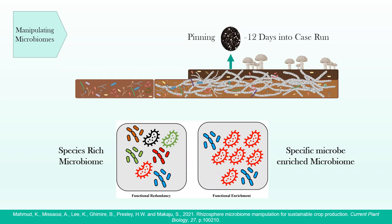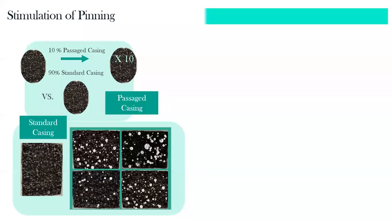To give an idea of what we see when we use passage casing: 10% is added to a 90% standard casing, carried out in the MRC as an experimental crop. In images from the same day, the standard casing shows no visible pins in experimental tubs, while the equivalent passage casing tubs show a lot of pinning — some mushrooms nearly ready to be picked. There's a very distinct stimulation of this process by using the passage casing.